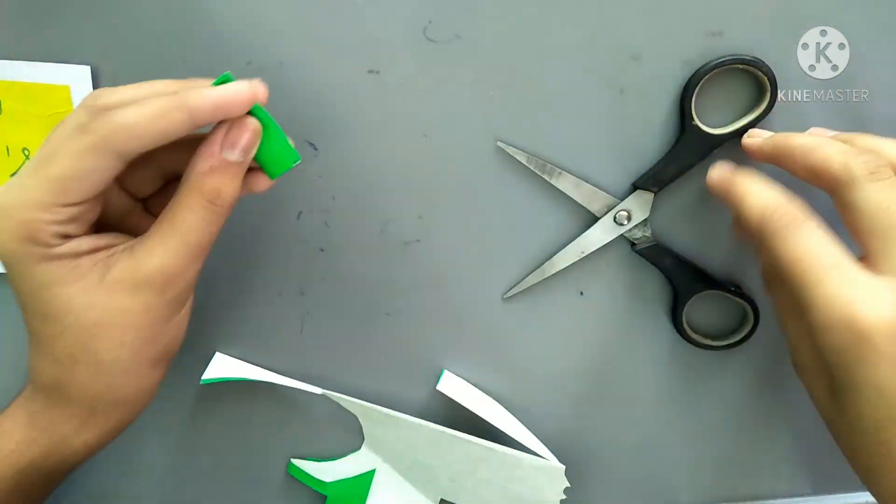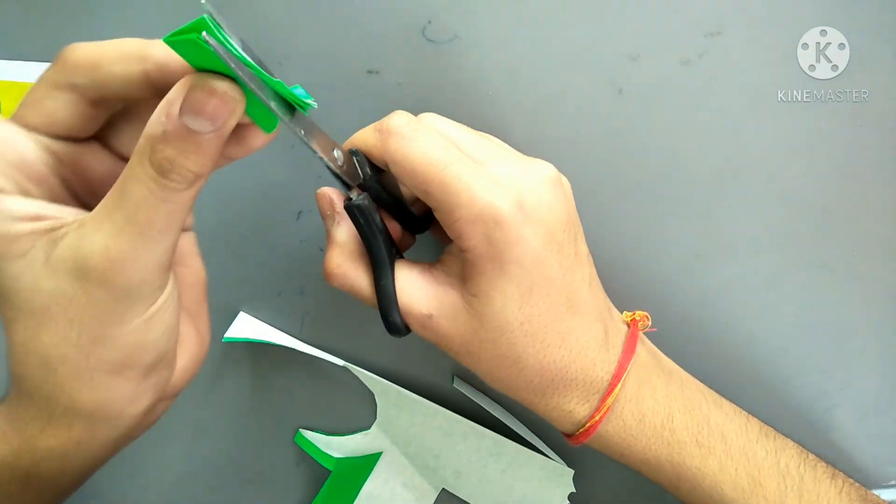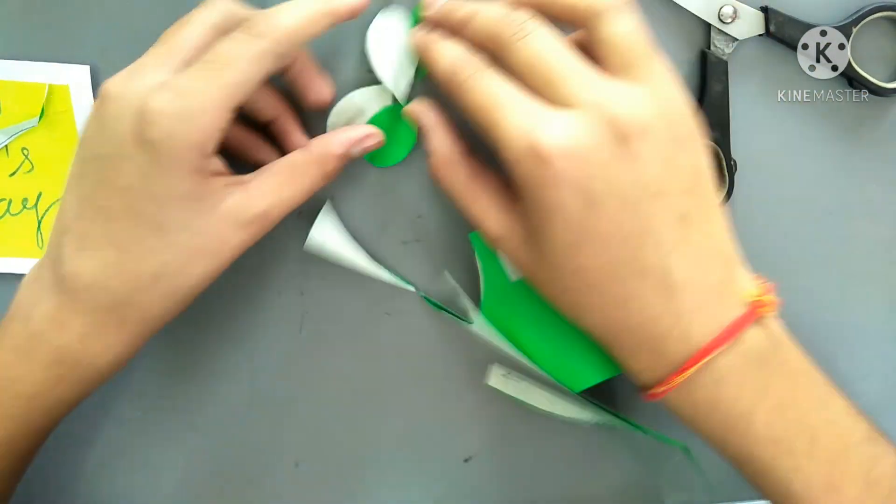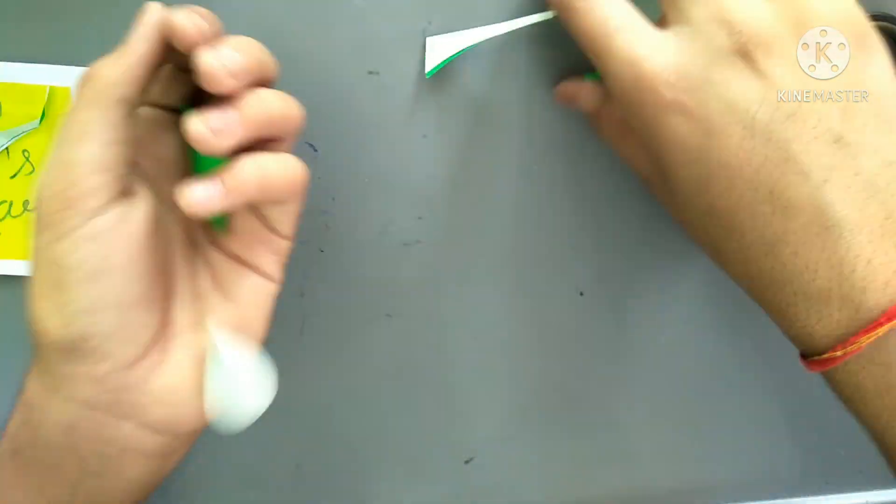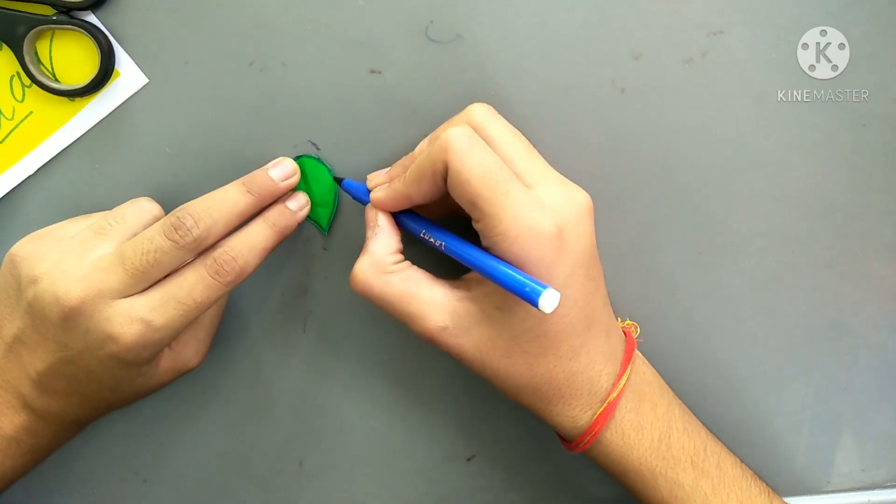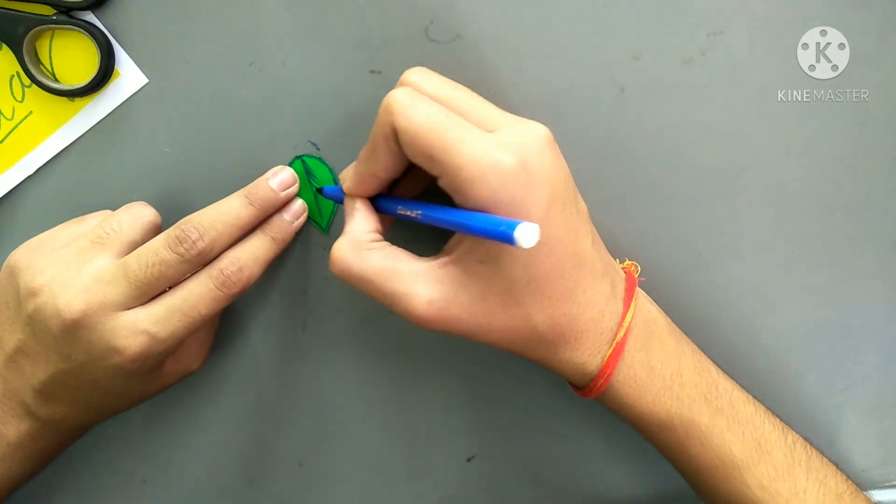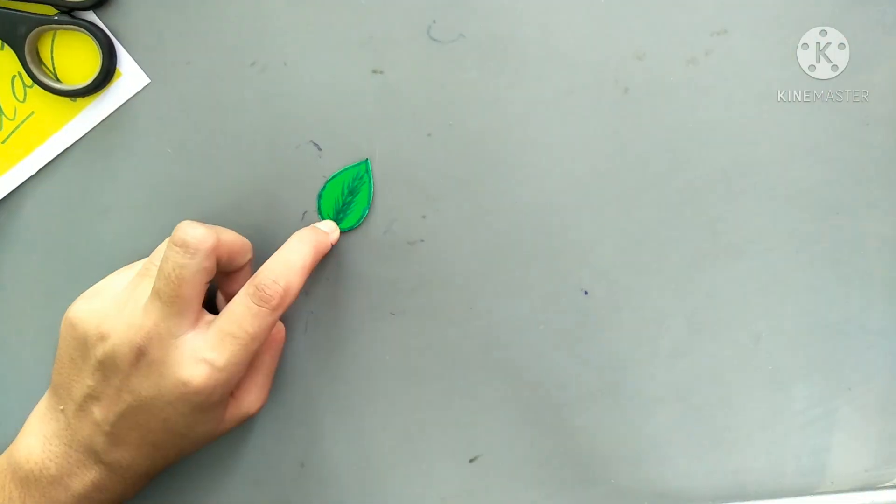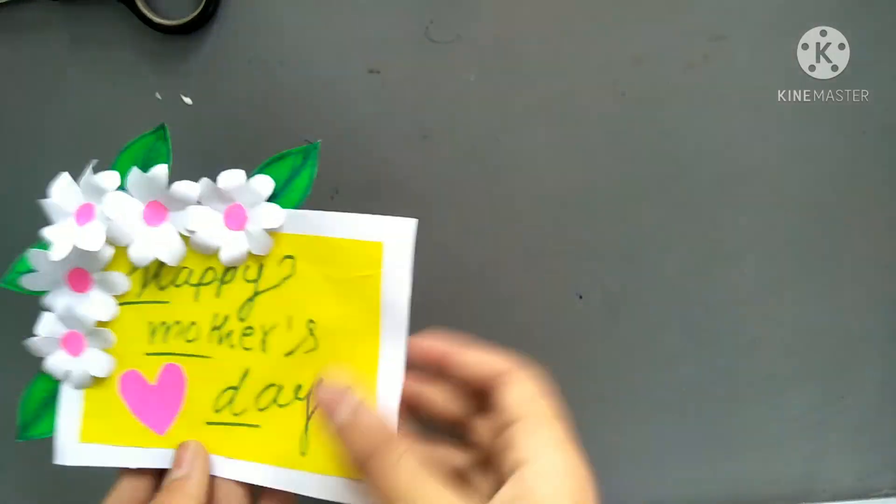Make leaves like this and your leaves will be ready. Now take a sketch pen and start drawing as I am doing. Start pasting these on the flowers. I hope you like this.